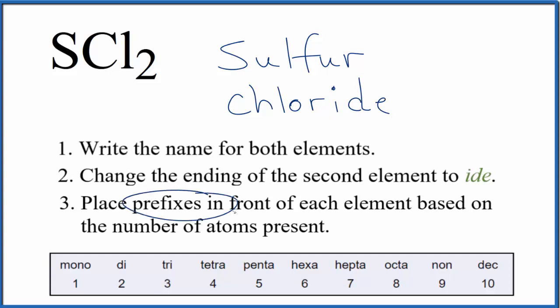Now we're going to use prefixes. We're going to put them in front of each element based on the number of atoms present. For the sulfur, there's only one sulfur, so we don't do anything there.